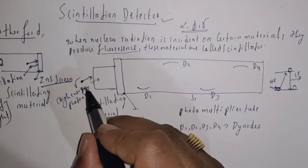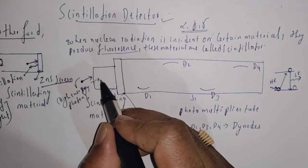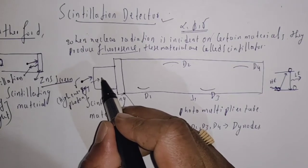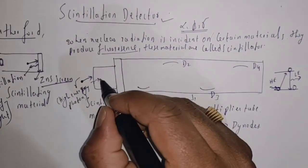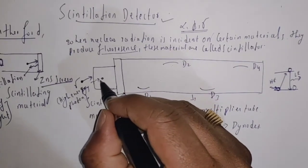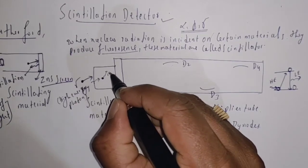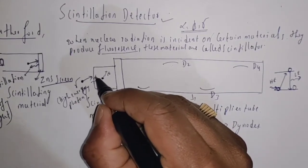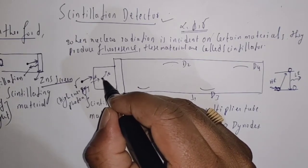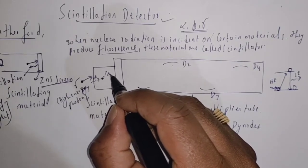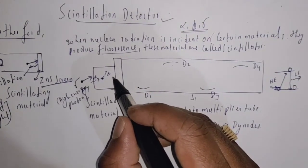The incident high energy photon is absorbed by the scintillating material atoms. When this high energy photon interacts with the scintillating material, low energy photons are produced. Initially it is having high energy, and after interacting with the scintillating material, a low energy photon is emitted. This low energy photon then interacts with the photocathode.